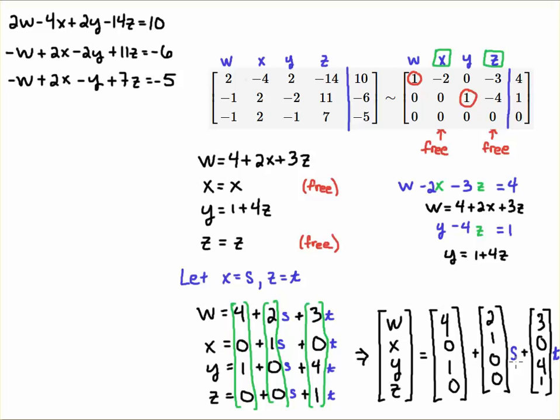So for example, if S is 0 and T is 0, then notice that 4, 0, 1, 0 does make a solution to the system. If I plug in 4 for W and 1 for Y, look, I get 8 plus 2 is equal to 10. I get minus 4 minus 2 is equal to minus 6. I get minus 4 minus 1 is equal to minus 5.